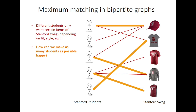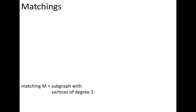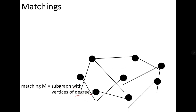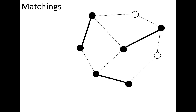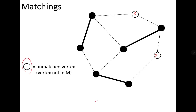A matching is where you match one set of objects to another set. A matching can be defined as a subgraph with vertices of degree one. For example, in a graph with eight vertices, one possible matching has three independent edges and two unmatched vertices. Independent edges means they do not have any endpoint in common.